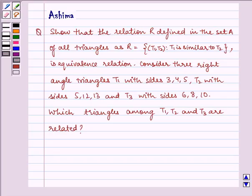Hello and welcome to the session. Let us understand the following question which says: show that the relation R defined in the set A of all triangles as R = {(T1,T2): T1 is similar to T2} is an equivalence relation.